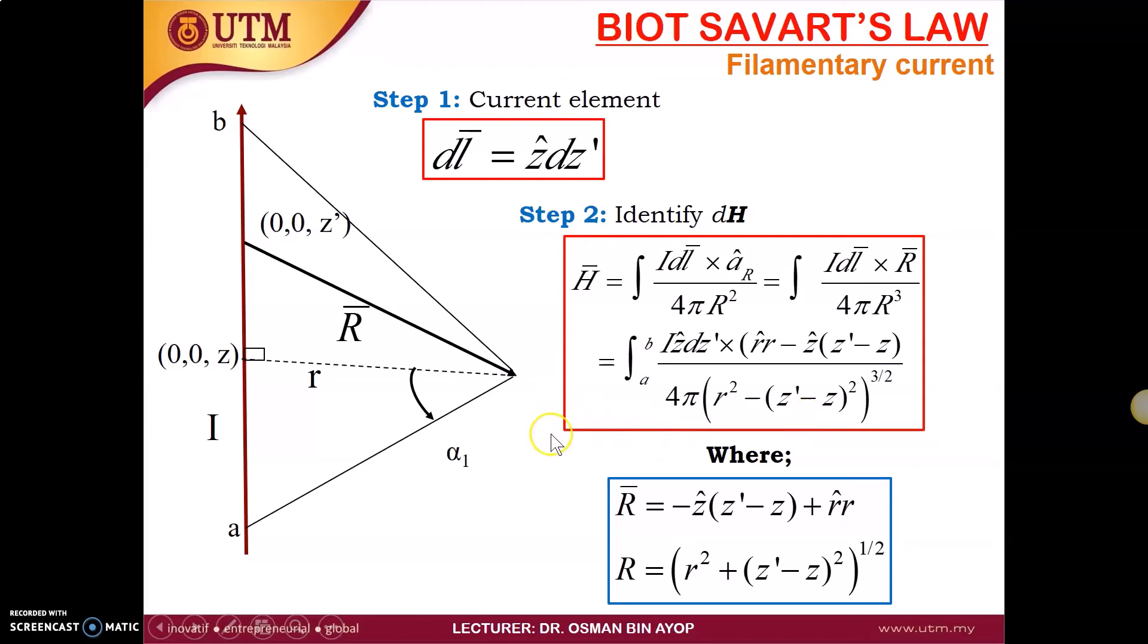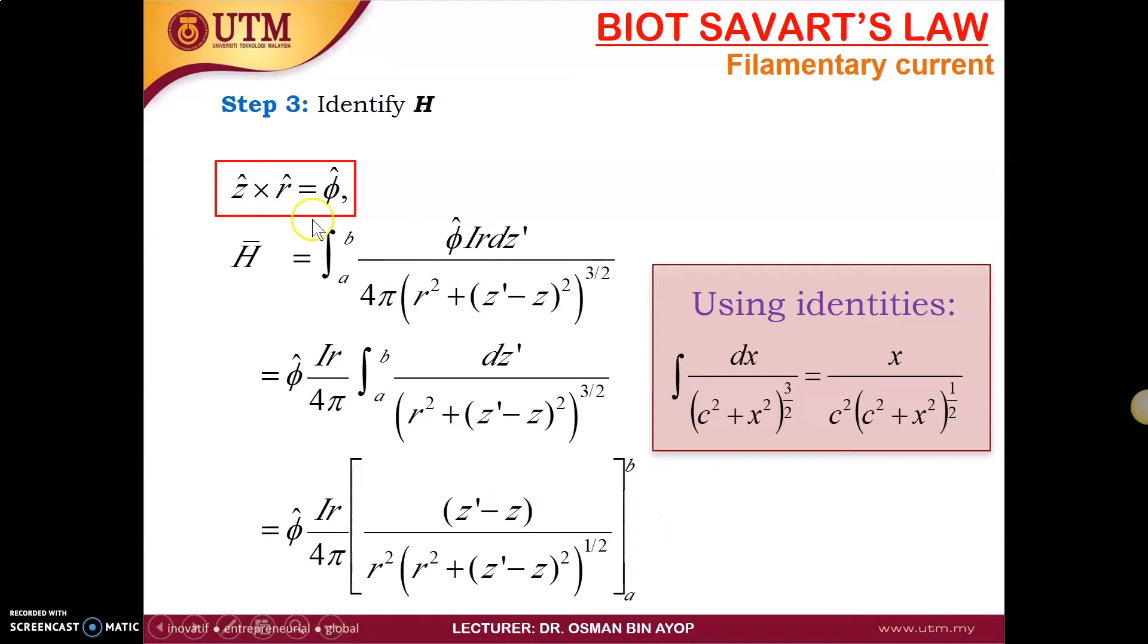We can rename from A to the normal line as alpha 1 and from B to the normal line as alpha 2. And then we can use this, we have basically for cylindrical coordinate we have R phi Z. So we have to solve the integration by using the identities as usual. So we integrate with dZ prime. This is the solution.